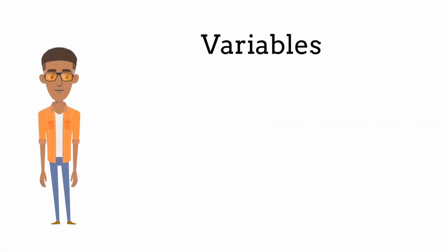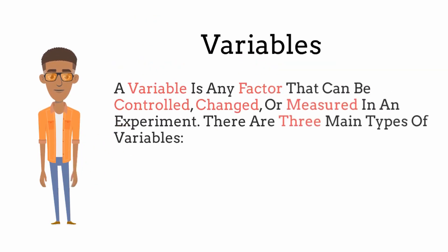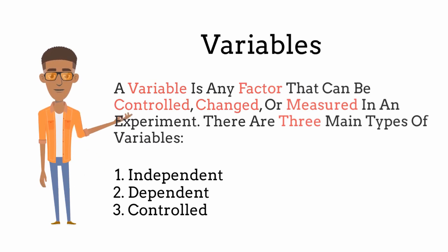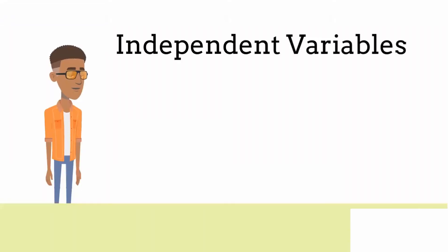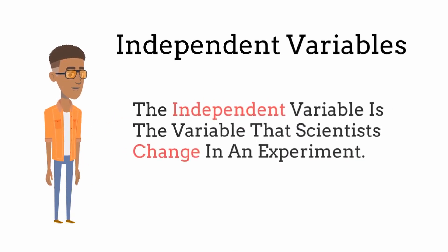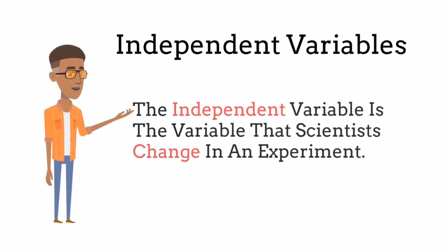Variables are extremely similar to fair test points, only a little bit more advanced. Basically, a variable is any factor that can be controlled, changed, or measured in an experiment. There are three main types of variables: the independent variable, the dependent variable, and the controlled variables. The independent variable is the variable that scientists change throughout an experiment. If you changed more than one variable, it would be hard to figure out which variable is causing the change you are observing.